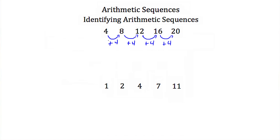Now because we're adding 4 each time we go to the next term in our sequence, and we're always adding 4, then this is an arithmetic sequence.